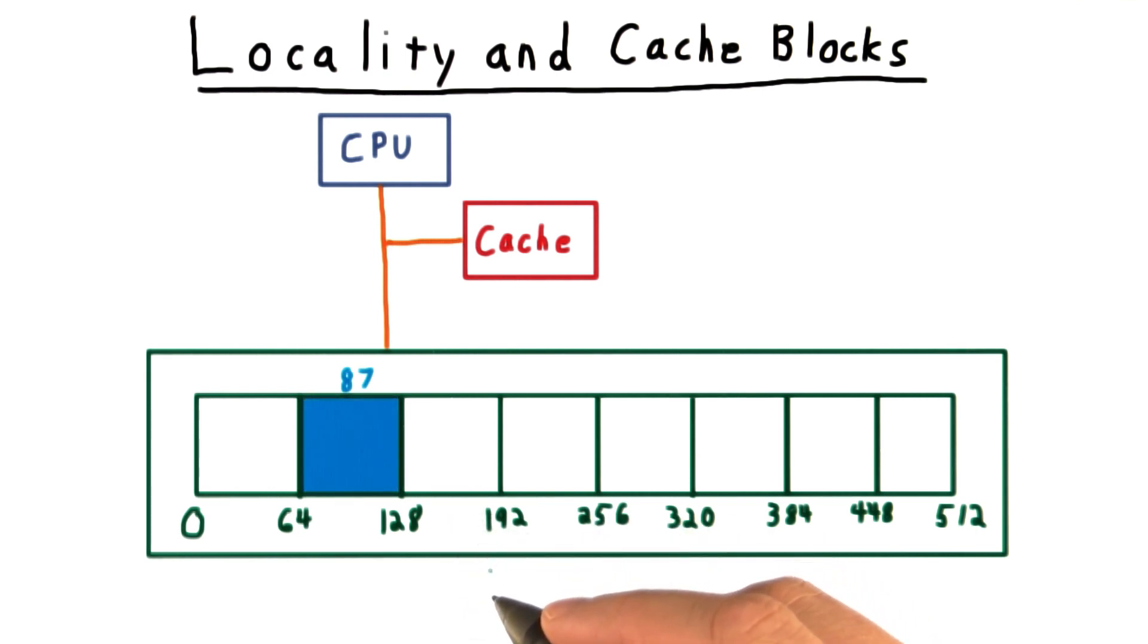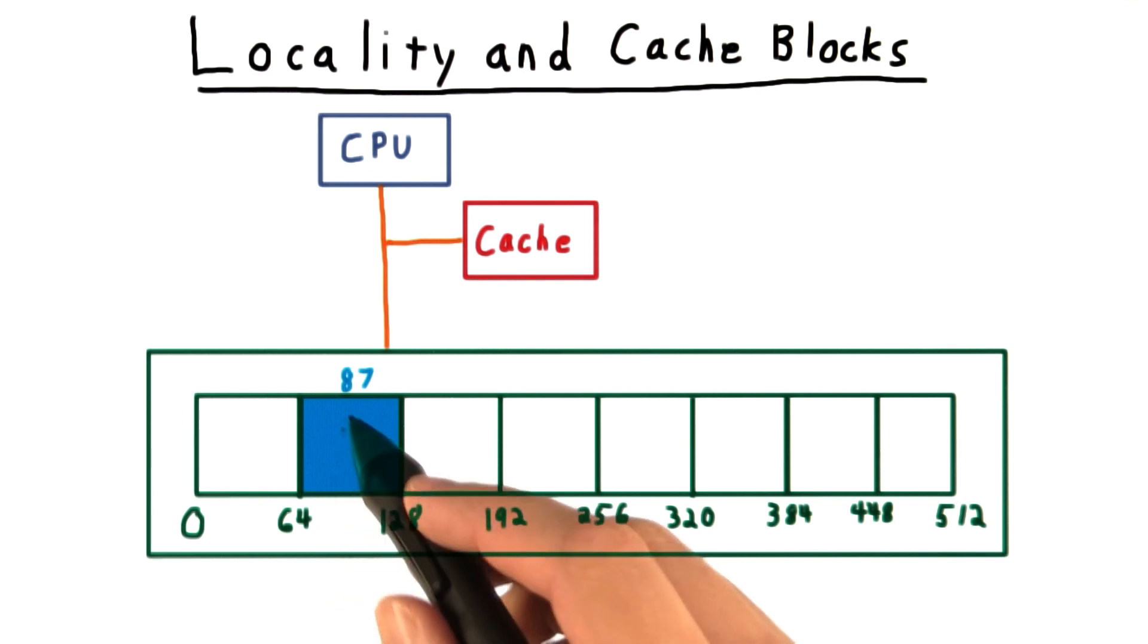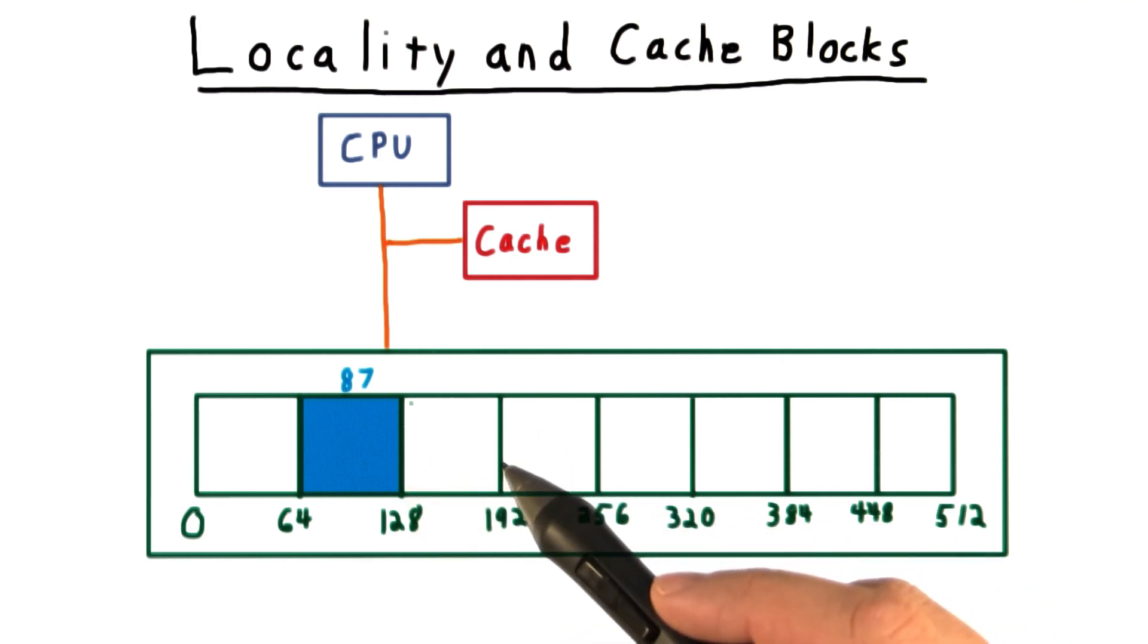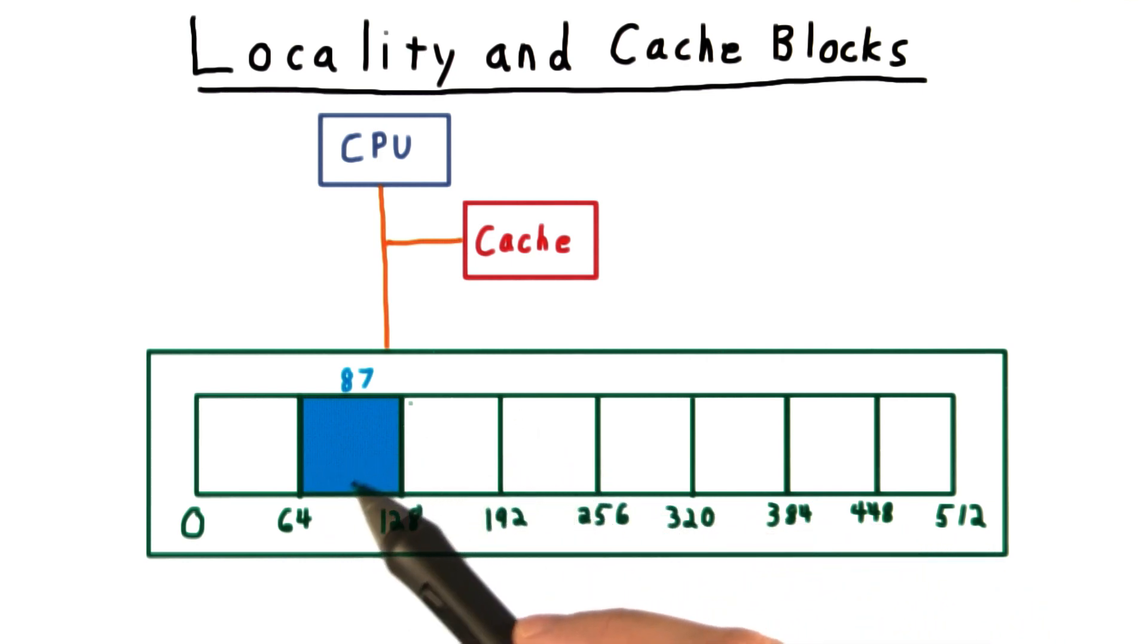Now, you may ask yourself, why do we put the block of memory into the cache instead of something more centered? Say, maybe the previous 32 bytes and the next 31 bytes, or something like that. After all, with blocks, sometimes most of the data we pull in will be higher in the address space, and sometimes most of it will be lower.